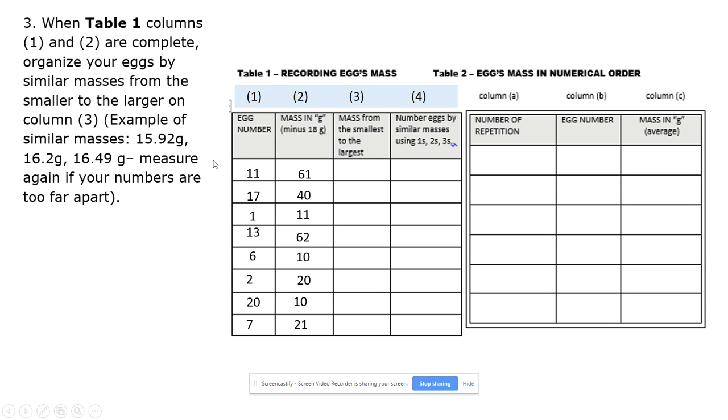Then, you are going to order the mass that you just recorded from smallest to largest in numerical order all the way down your chart. There are two tens, so go ahead and record both tens and then 11, 20, all the way down the chart.